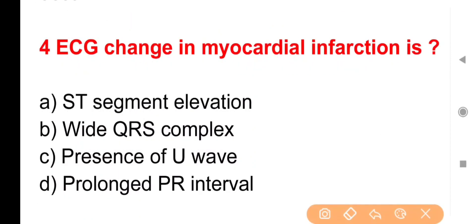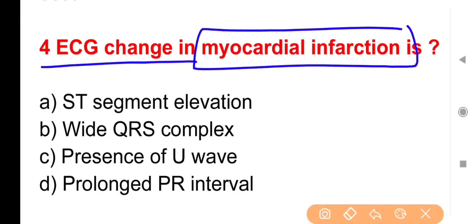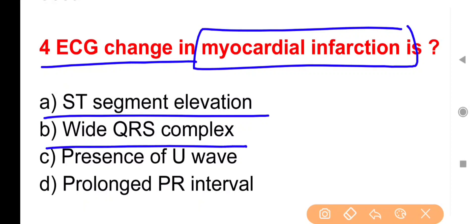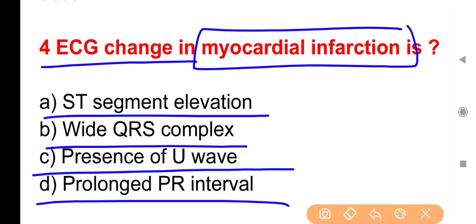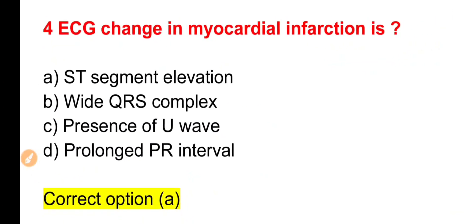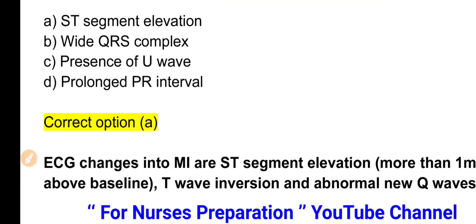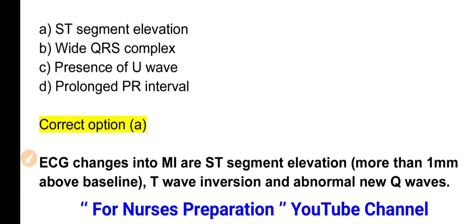Next Question: ECG changes seen in myocardial infarction — heart attack आने पर ECG में किस प्रकार के changes देखे जाते हैं? Option A: ST Segment Elevation. Option B: Wide QRS Complex. Option C: Presence of U-Wave. Option D: Prolonged PR Interval. The right answer is Option A.